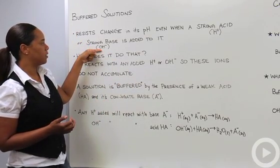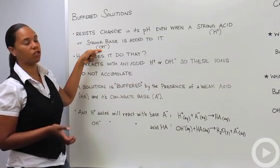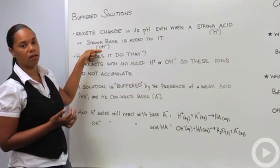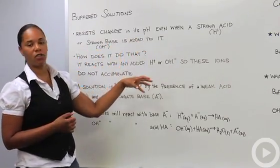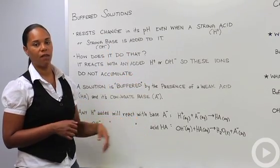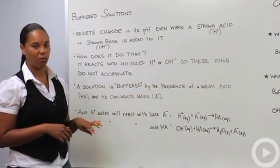Strong bases dissociate in solution to give you a strong increase in hydroxide ions. Usually if a solution is not buffered, you dump in a bunch of protons then your pH is going to go down making it more acidic.